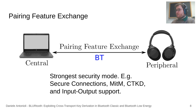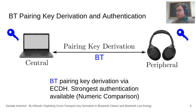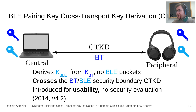Once pairing starts, the victims negotiate the strongest security features they support, including secure connections, machine-in-the-middle protection, input-output capabilities, and CTKD support. They exchange public keys and derive the BT pairing key using elliptic curve Diffie-Hellman — the blue key in the figure. They then mutually authenticate the pairing key via Bluetooth association. For example, if both devices have IO capabilities, they show a numeric value on their screens that the user confirms — called Numeric Comparison Association — protecting against machine-in-the-middle attacks. Then the victims employ CTKD to locally derive the BLE pairing key, the light blue key in the figure, without sending a single BLE packet.